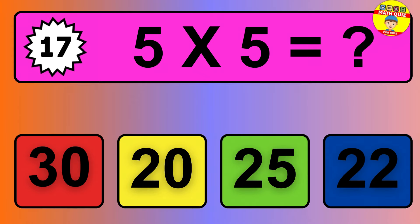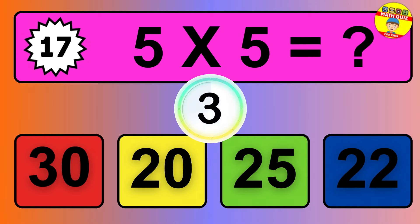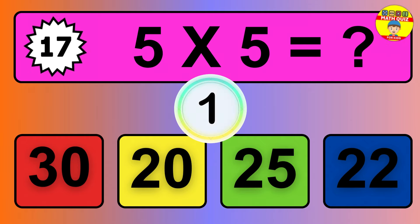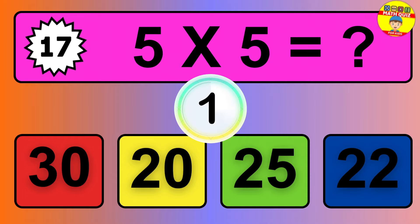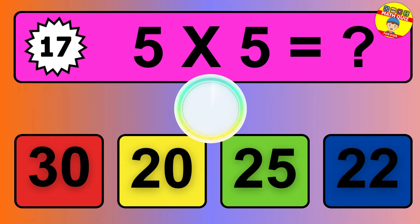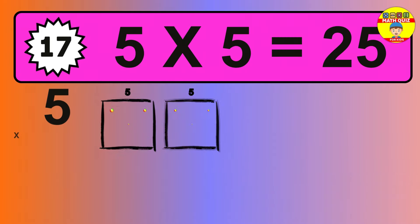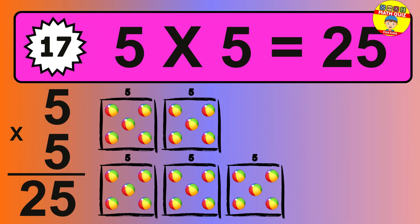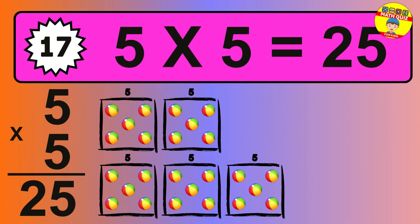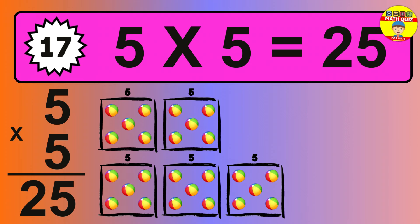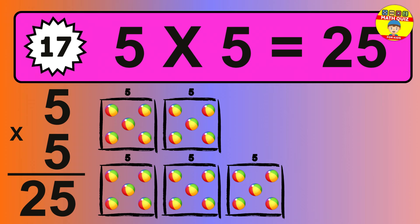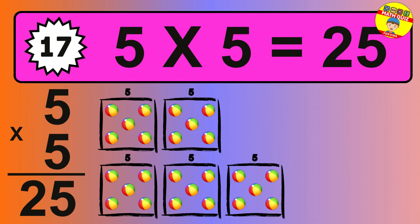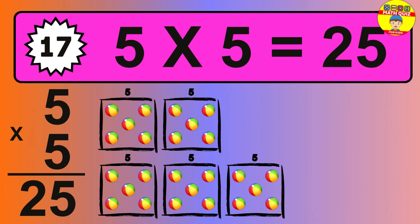Question 17. 5 times 5 equals what? The answer is 5 times 5 is 25. To calculate, we have 5 groups with 5 balls each one. So how many balls do we have? 25 balls.